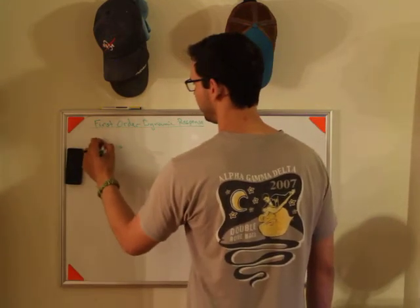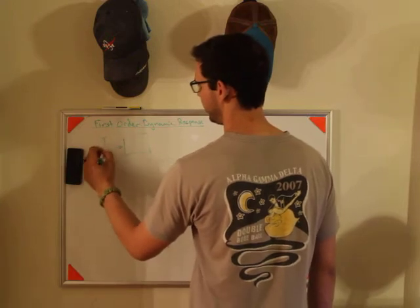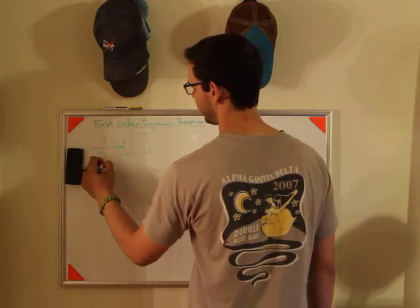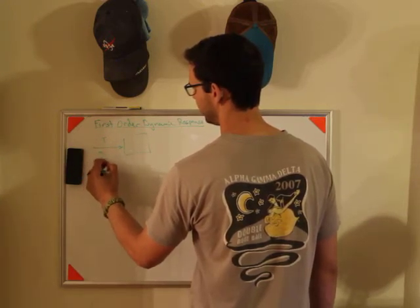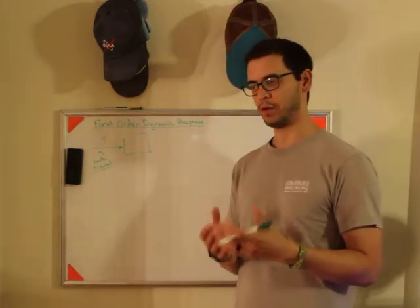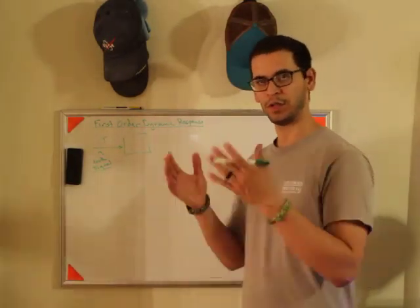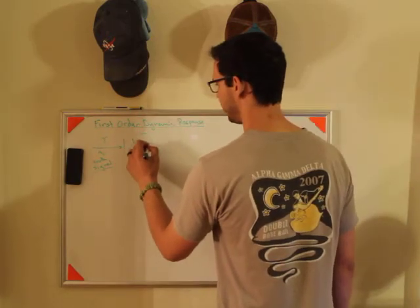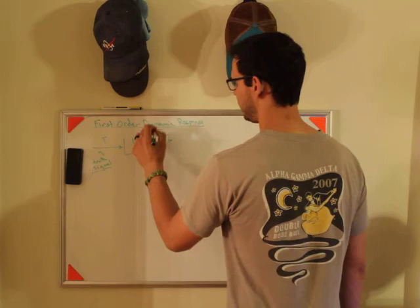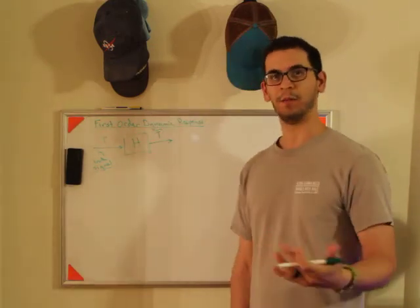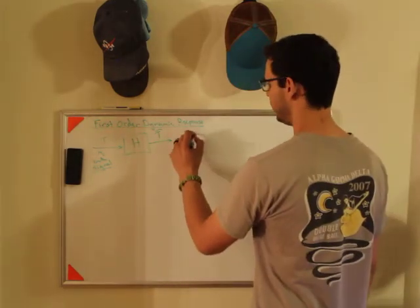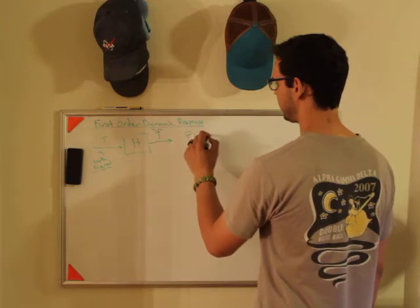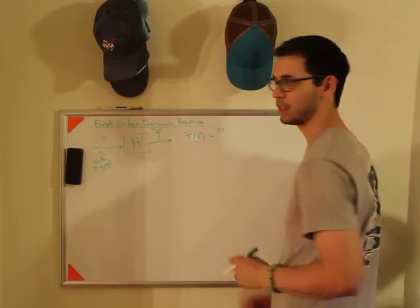Okay, so I'm going to assume my input is the truth signal, so that's like the actual, if there was full truth, this is what the temperature really is. I'm going to call this H, my sensor block, and then T tilde is going to be my output. And what I want to know is my measured signal as a function of time.